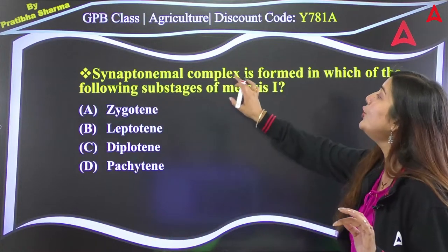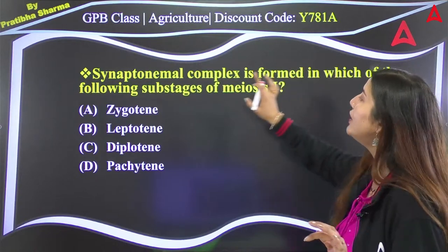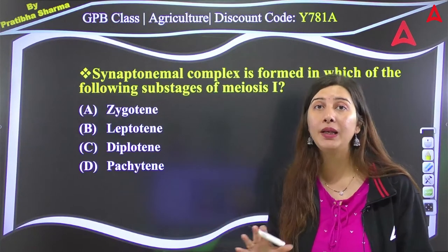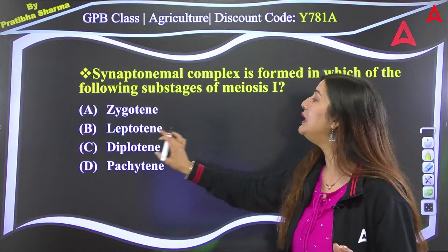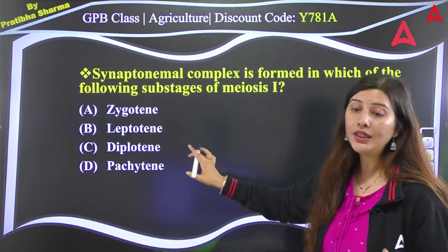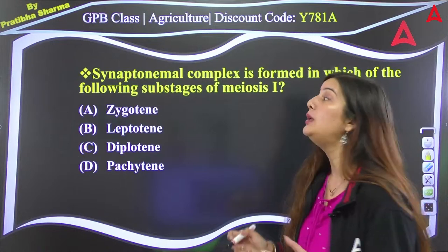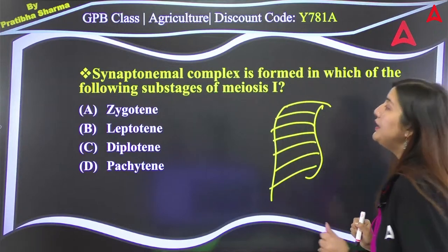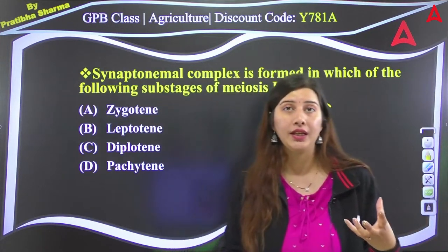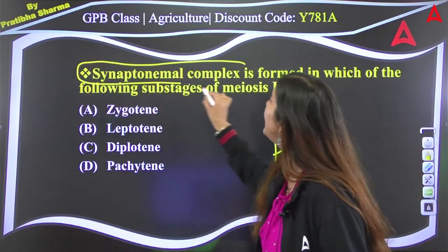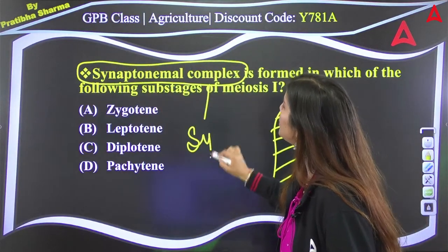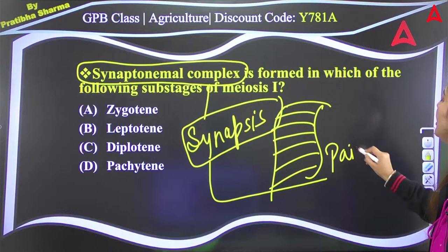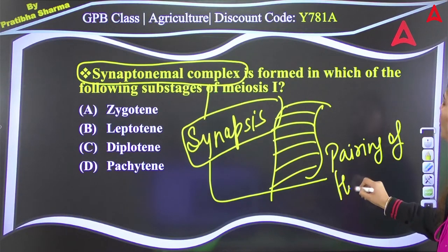Next question: synaptonemal complex is formed in which sub-stage of meiosis I? Options: A: zygotene, B: leptotene, C: diplotene, D: pachytene. The synaptonemal complex is a ladder-like structure formed where synapsis occurs — synapsis meaning pairing of homologous chromosomes.